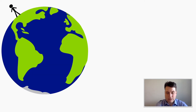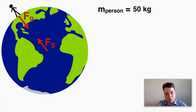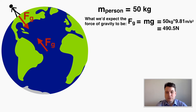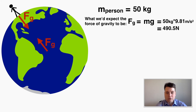Let's do another example — a more realistic one: calculating the force that earth puts on a person and the force the person puts back on earth. We'd expect the force of gravity on a 50-kilogram person to be m times g, so 50 times 9.81 equals 490.5 Newtons. We'll check whether the new equation gives the same number.